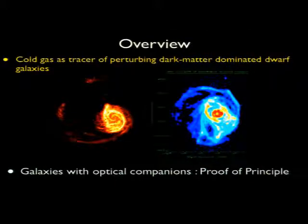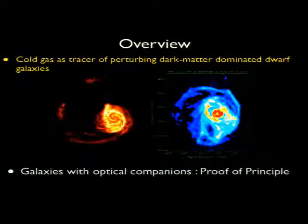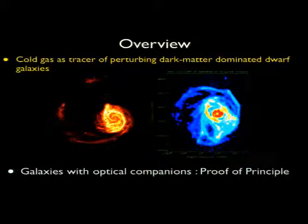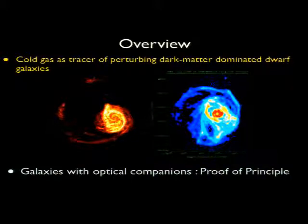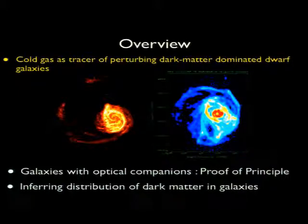The structures we're analyzing are on the very outskirts of spirals. This is the H1 map of M83, and the length scale here is about 100 kpc. The optical radius is here, so we're analyzing structures at the very edges, where the effects of perturbers are predominant over the intrinsic response. I'll first talk about the proof of principle by applying it to galaxies like M51 that have optically visible companions, and then I'll talk about recent work to infer the distribution of dark matter in the larger primary spiral galaxy itself.